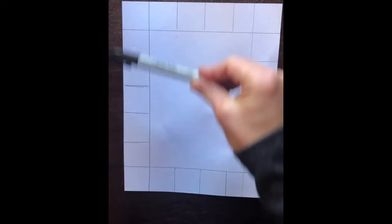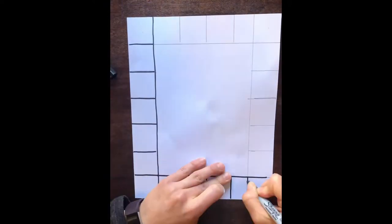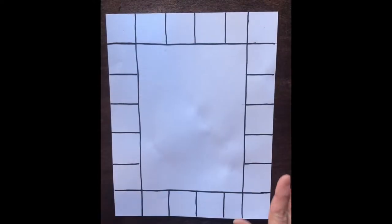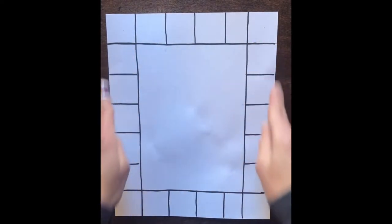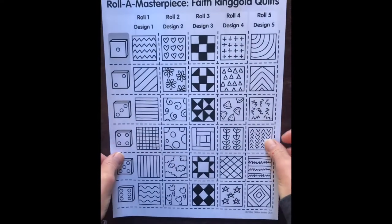So now that I have my squares, I'm going to take my Sharpie marker and I'm going to outline my border. So all my squares for my quilt are outlined in my black Sharpie marker.